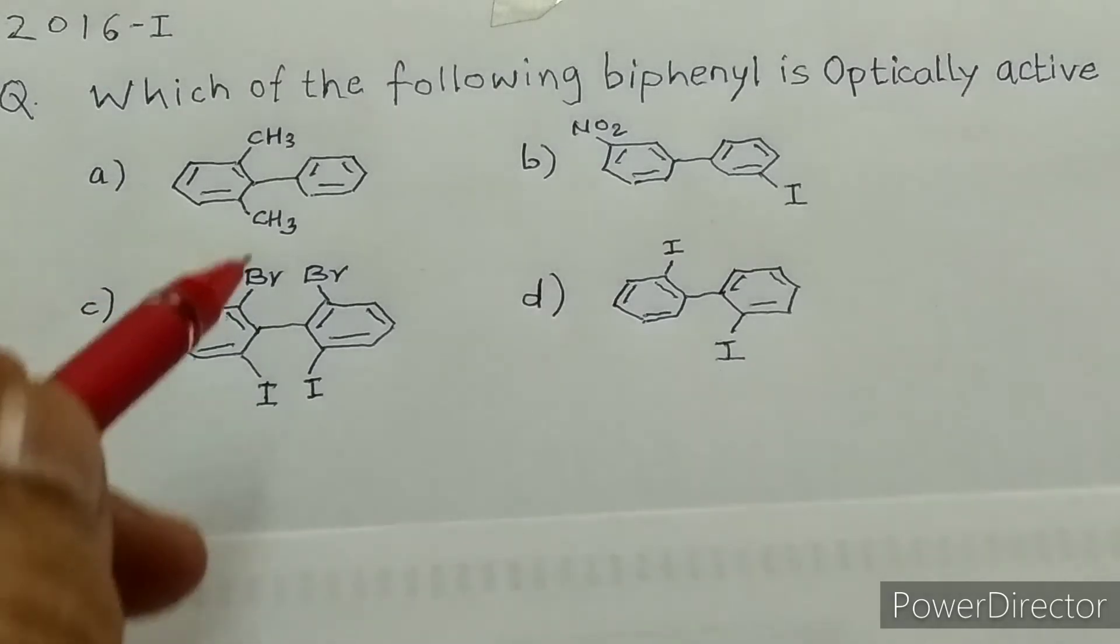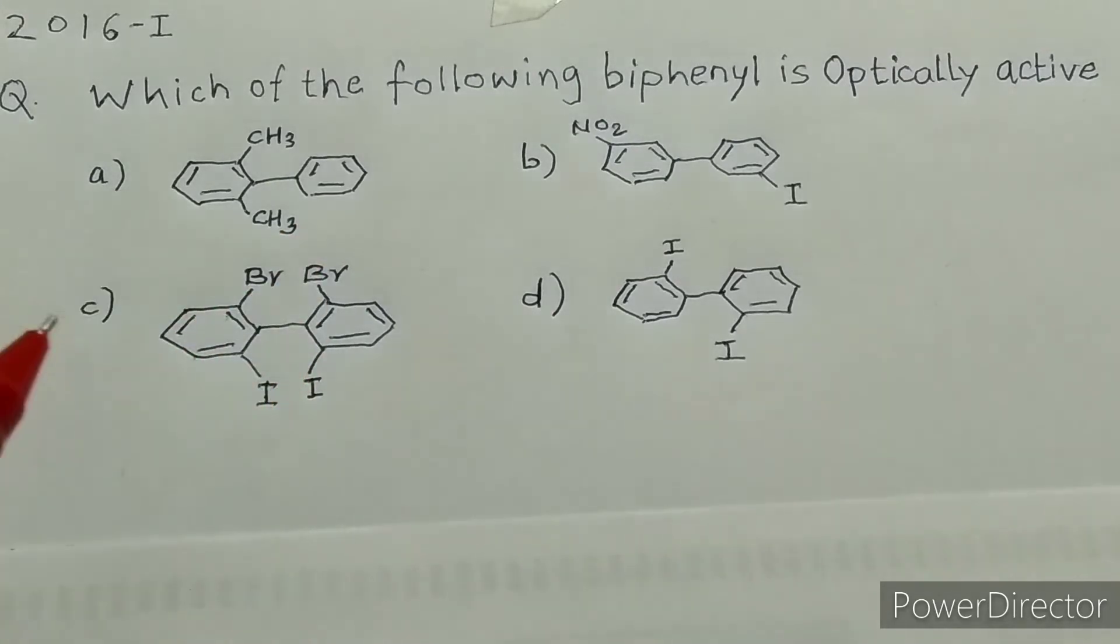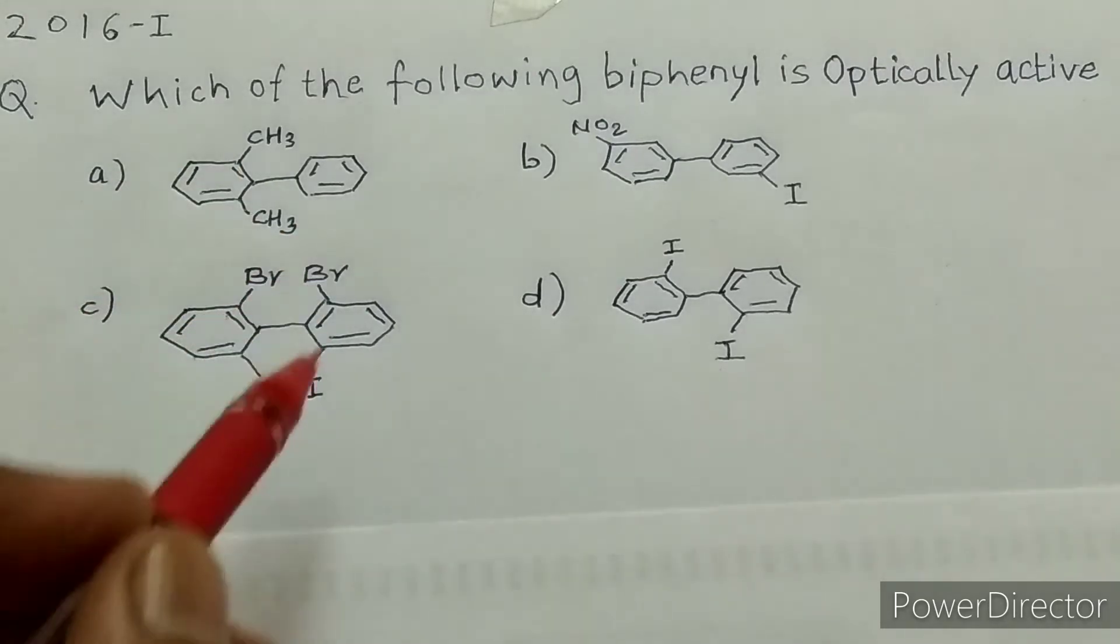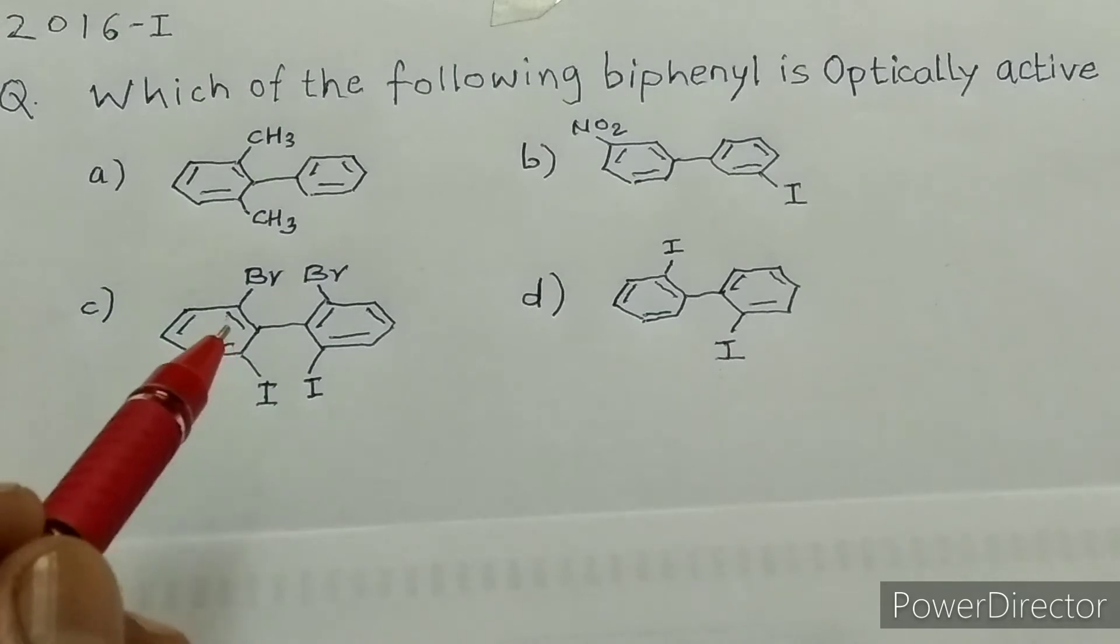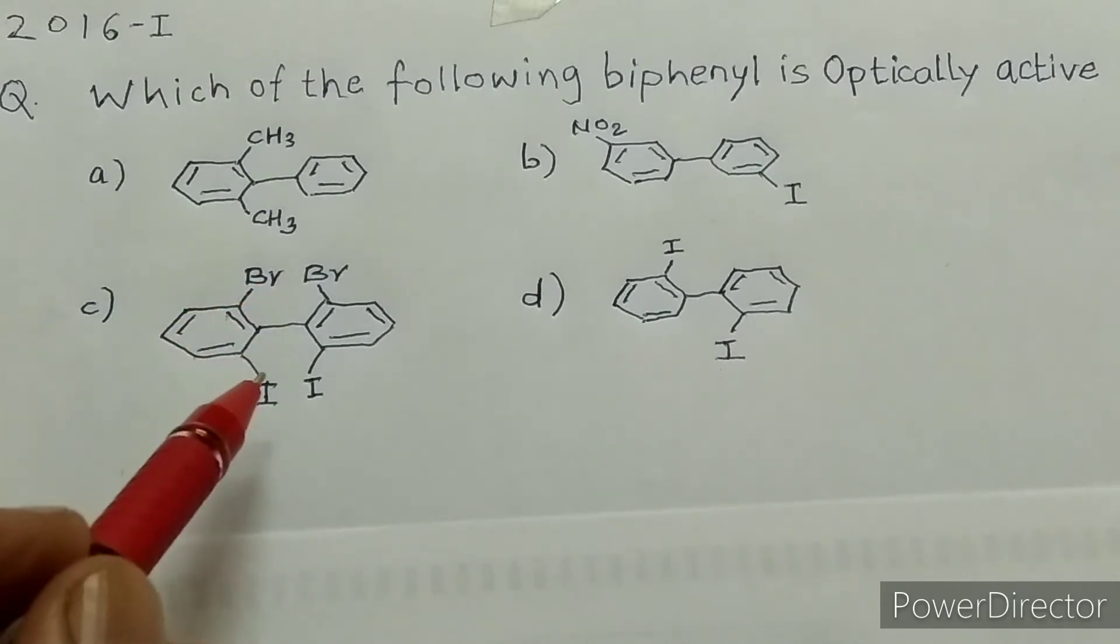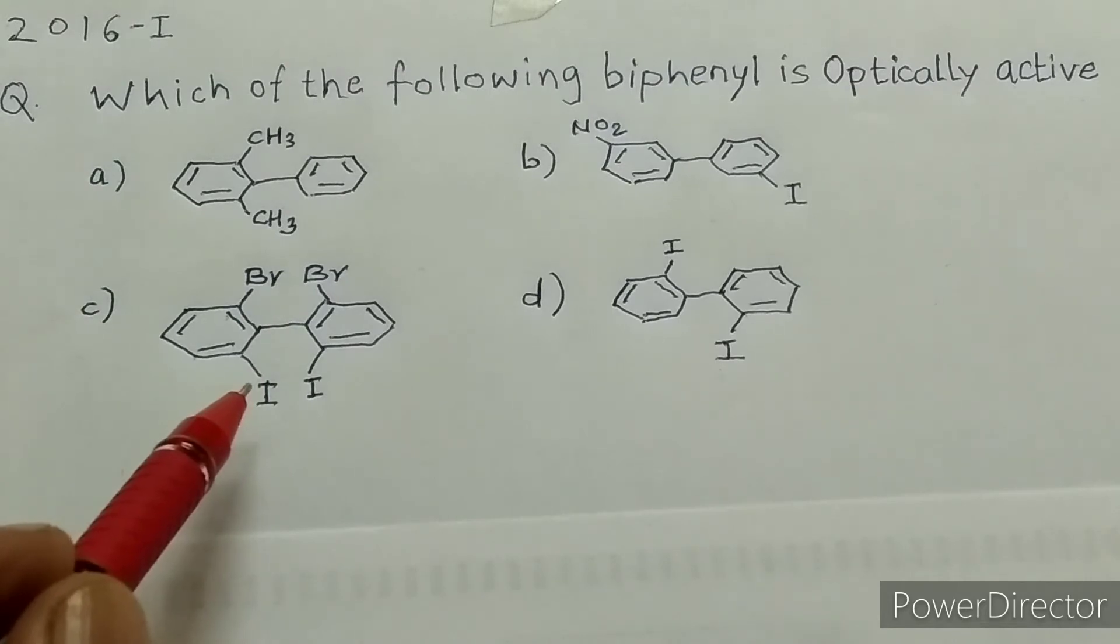Therefore, option C has bulkier groups on ortho positions, and due to these bulkier groups, the molecule becomes non-planar and has a non-superimposable mirror image.